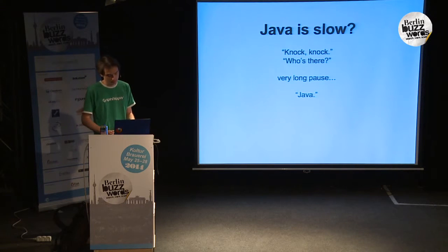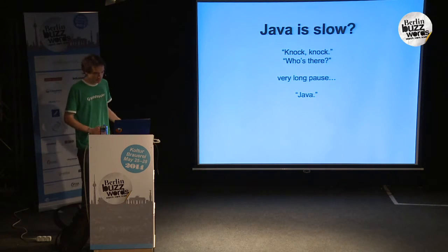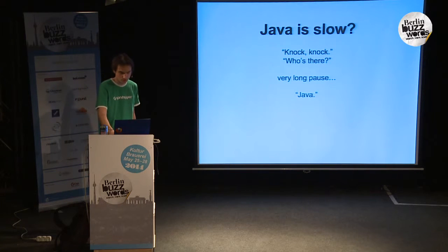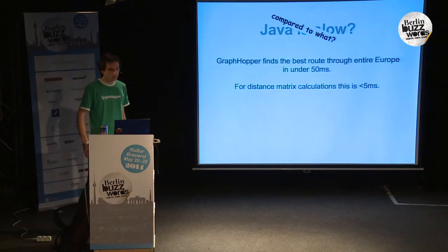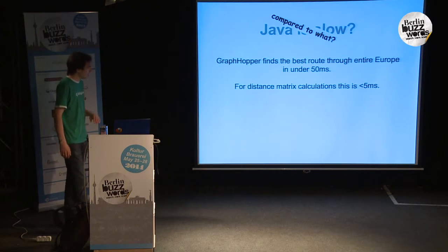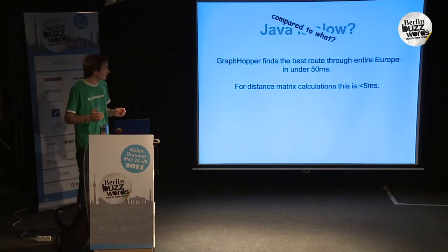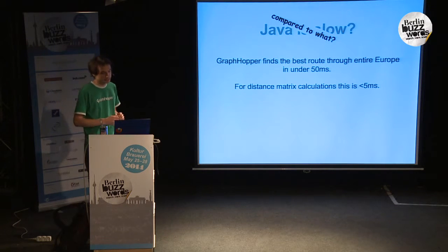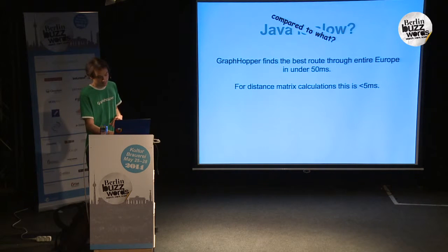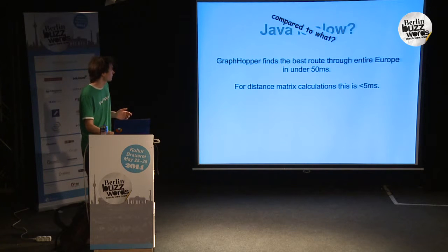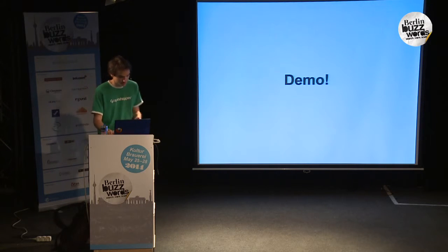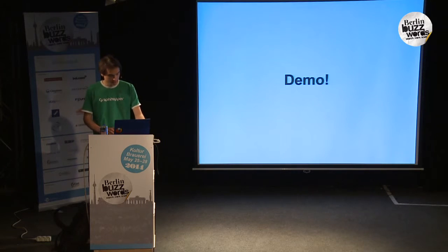You often hear 'Java is slow,' and you know all the funny jokes about Java. But slow compared to what? GraphHopper finds the best route through the entire Europe dataset in under 50 milliseconds, and for distance matrix calculation it's even a lot less. So Java is not really slow. I will do a slightly risky thing and do a demonstration on the internet to show you what I mean.